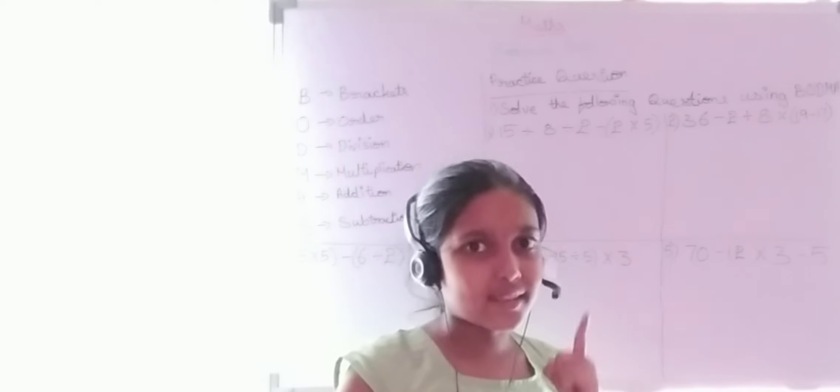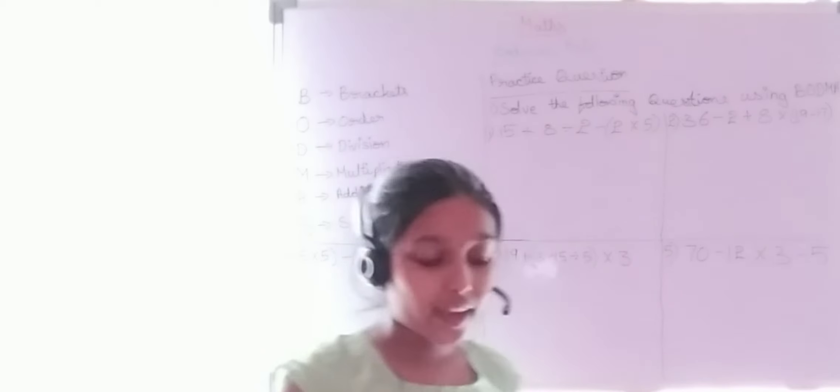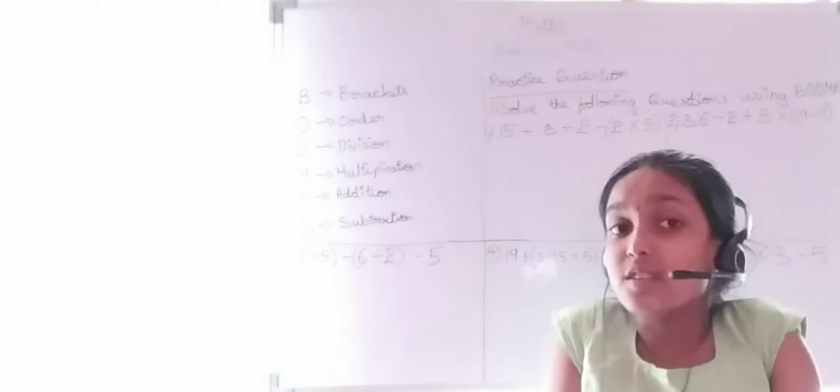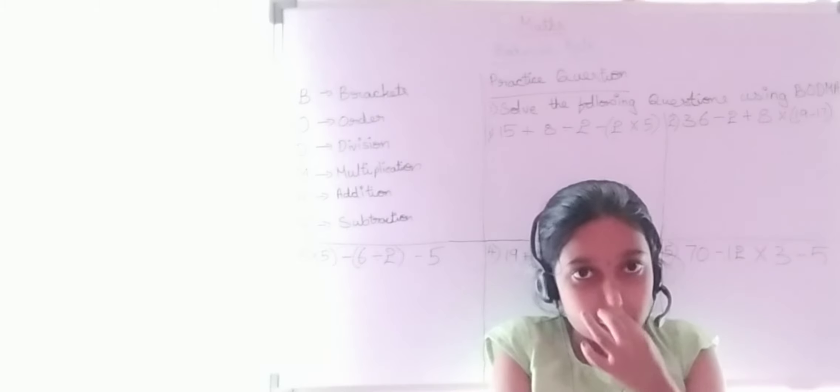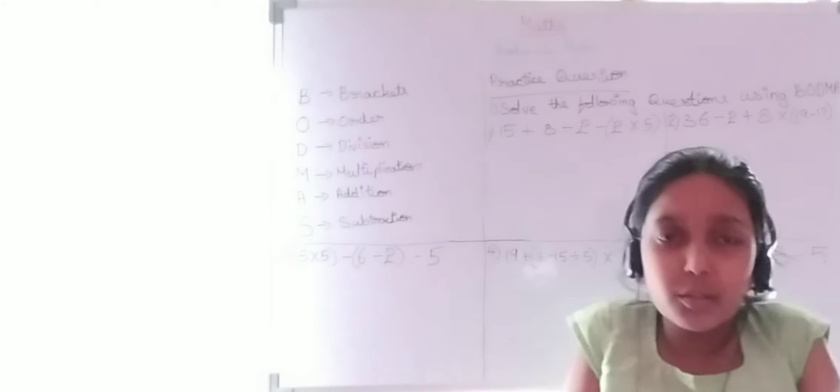In my previous class we learnt about Roman numerals. In this class we will learn about the BODMAS rule. The BODMAS rule is the order of operations to make sure that we always get the same answer when performing arithmetic operations. The BODMAS rule tells us the order in which operations need to be performed.